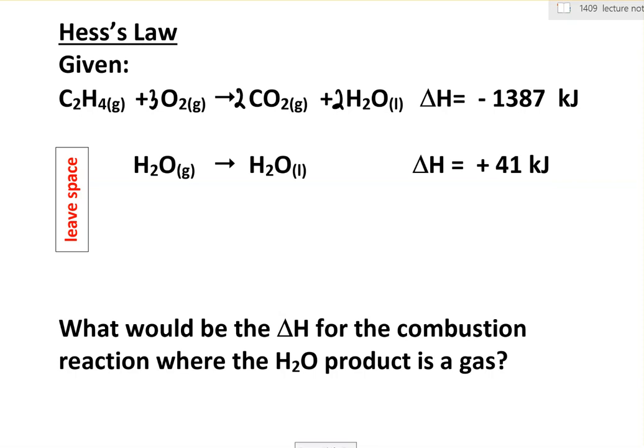This Hess's Law problem is a pretty simple one. We're going to basically make an adjustment so that this top reaction, which is a combustion, we want it to have water here as a gas as a product and figure out what the number would be here, the heat of the reaction, if that were a gas.